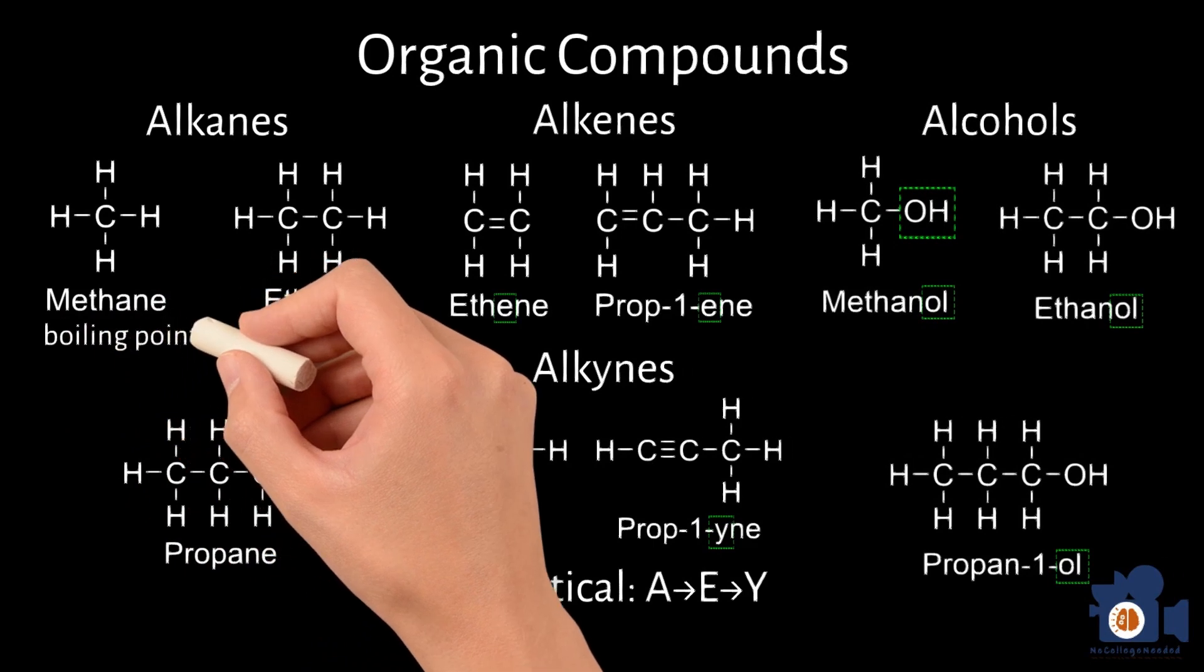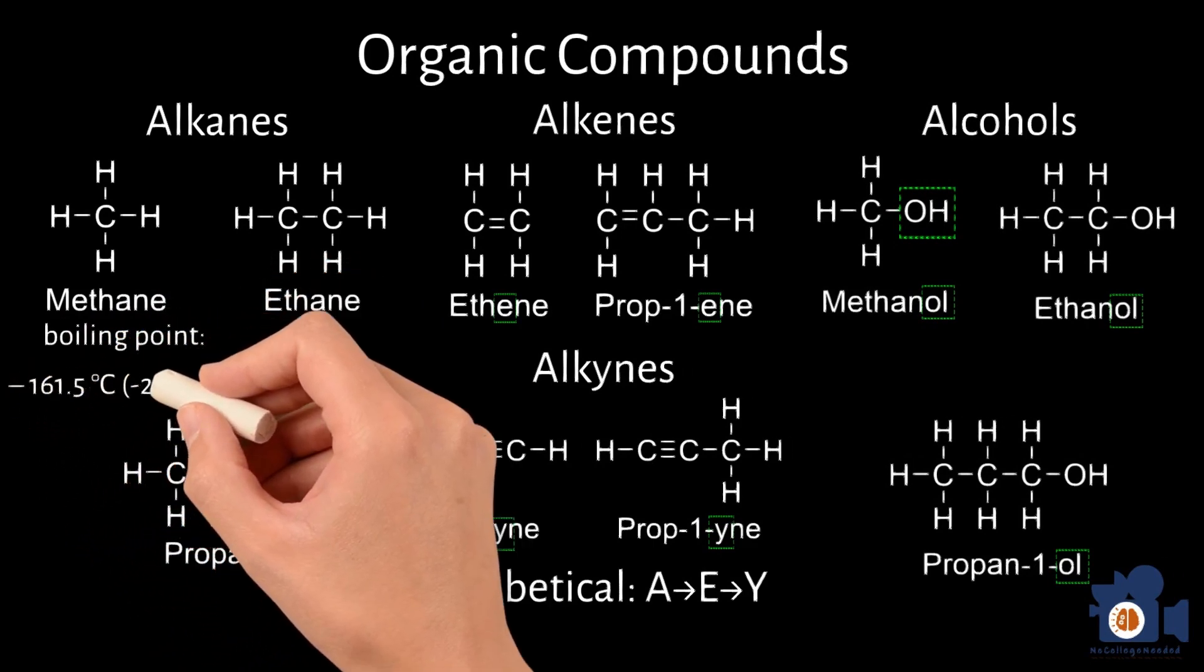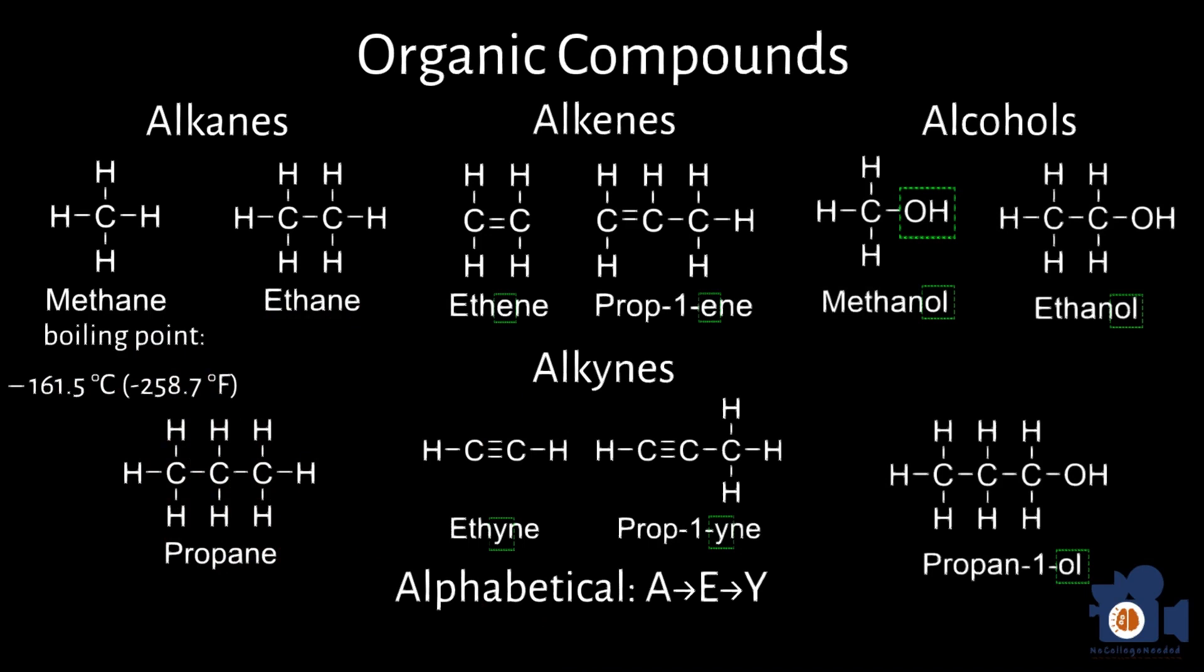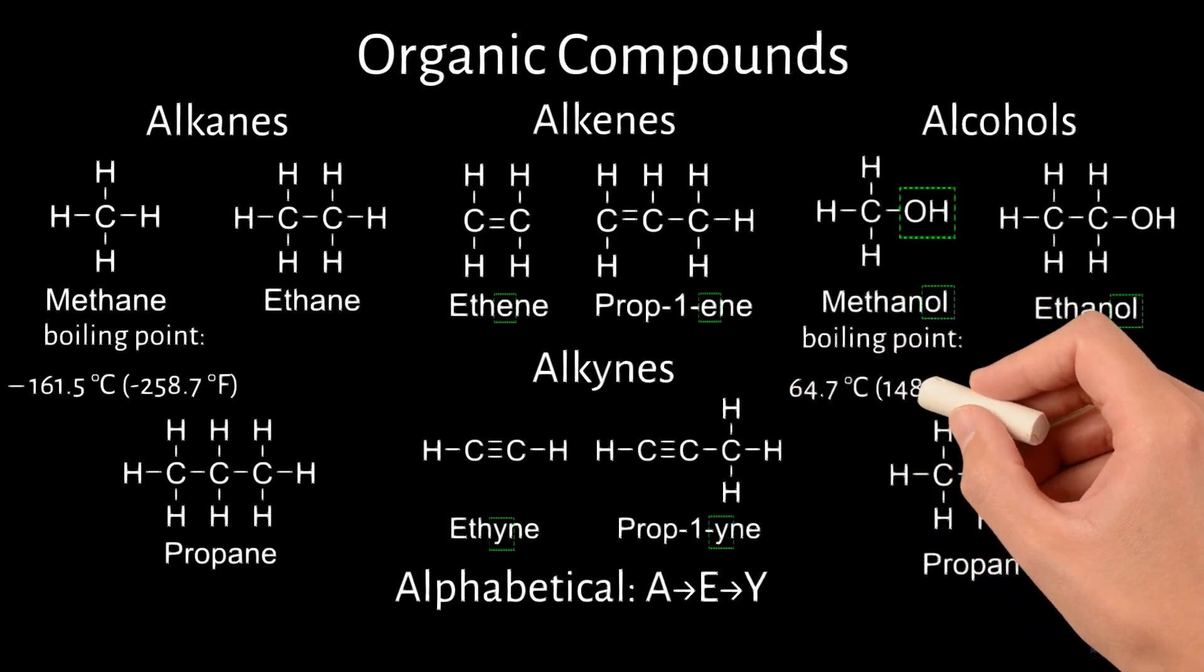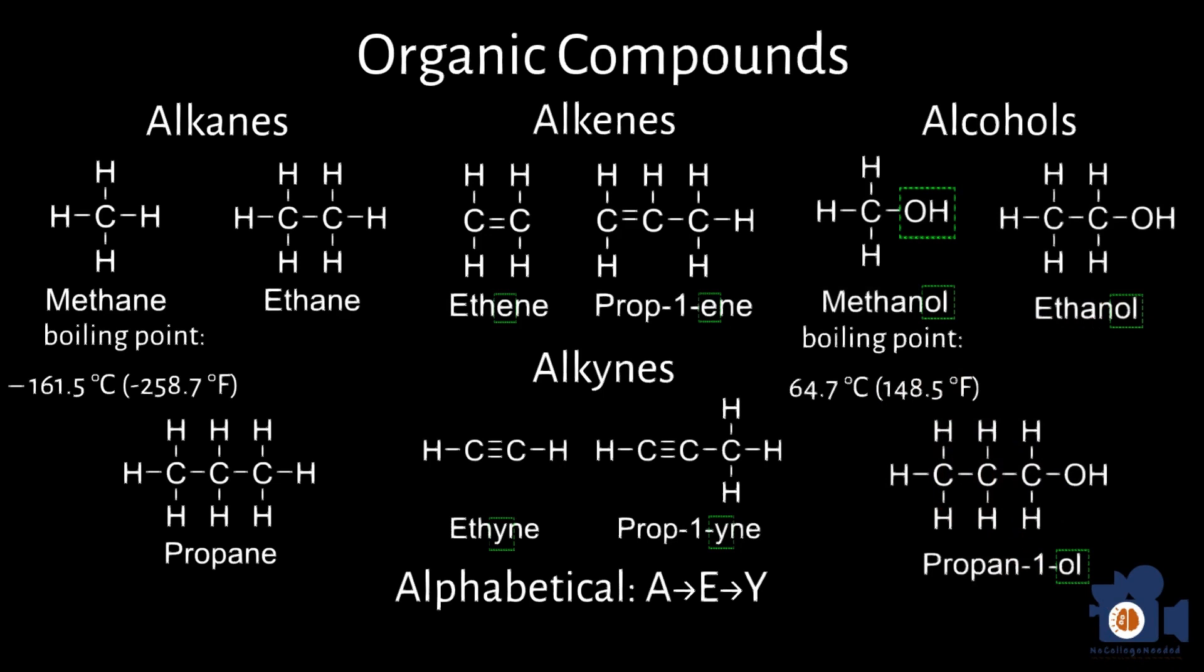For example, the boiling point of methane is negative 161.5 degrees Celsius, or negative 258.7 degrees Fahrenheit, while the boiling point of methanol is 64.7 degrees Celsius, or 148.5 degrees Fahrenheit.